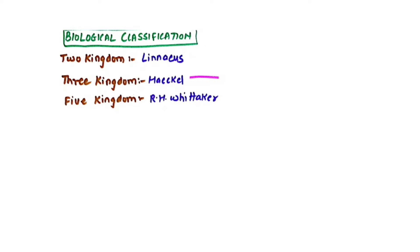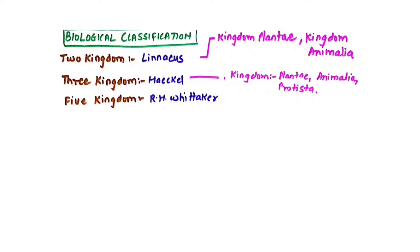The two-kingdom classification was given by Carolus Linnaeus, who classified all living organisms into Kingdom Plantae and Kingdom Animalia. The problem was that bacteria didn't get any place in this classification. Then came the three-kingdom classification by Haeckel, whose three kingdoms were Plantae, Animalia, and Protista — including all unicellular organisms. However, prokaryotic unicellular organisms were still not considered, as Protista included only unicellular eukaryotic organisms.